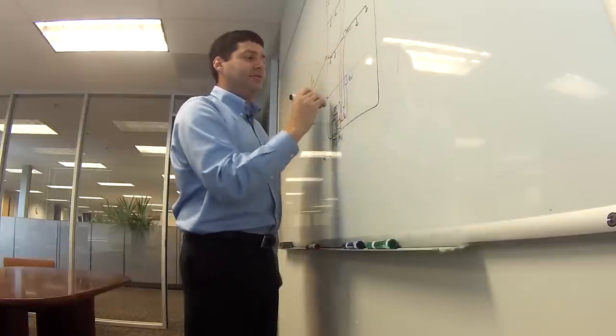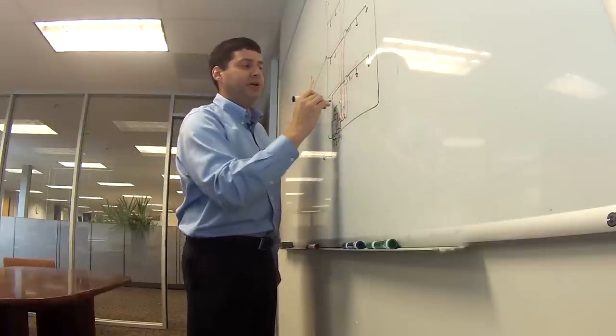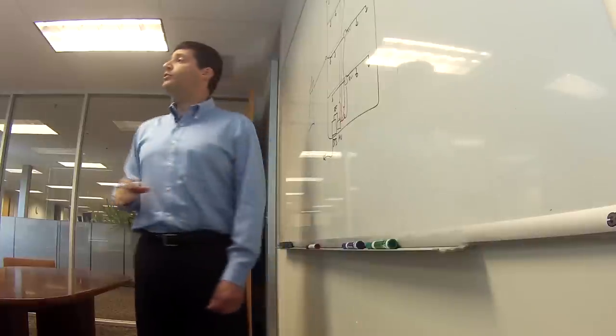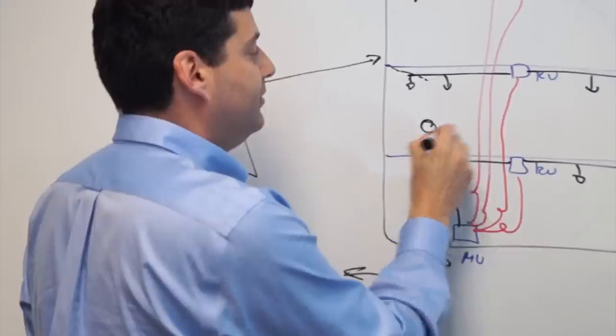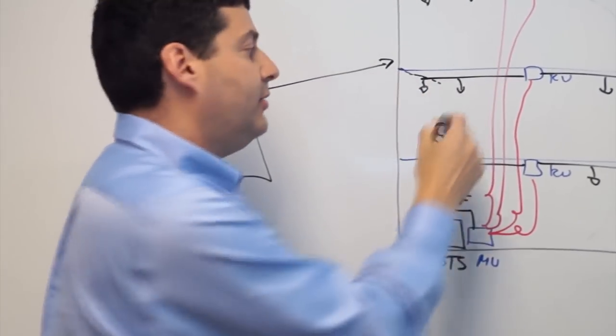So the advantage of this type of system is you're able to take a very simple base station, which would be on a single location, and you're able to move it throughout the building so that each one of the users, the cell phone, is very close to where the signals are coming.